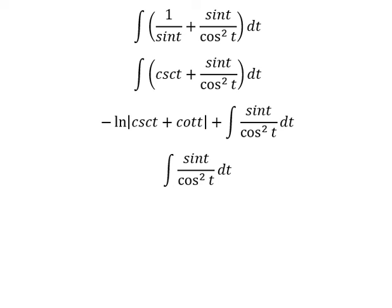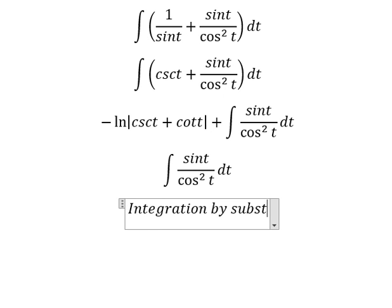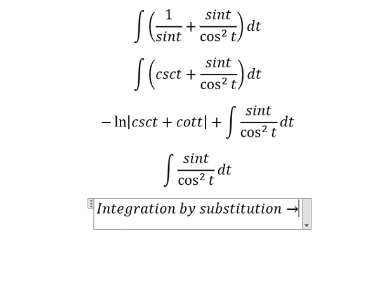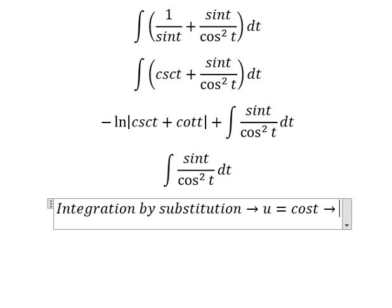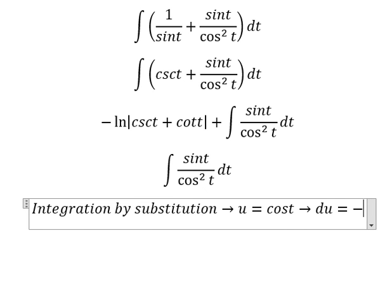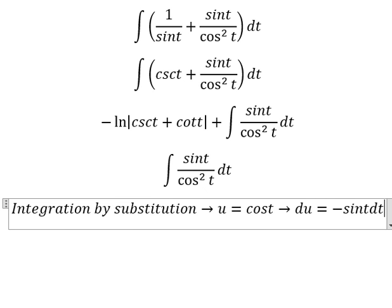We need to use integration by substitution. We put u equal to cosine t. Du gives us negative sine t dt. Because we don't have the negative sign in here, we put the negative next to du.